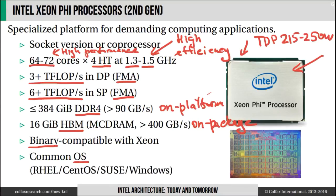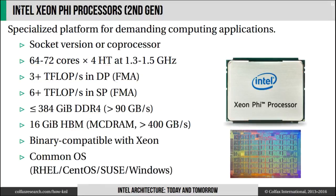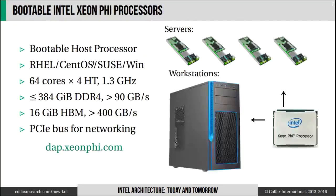Indeed, you can run general-purpose operating systems on Xeon Phi. There is official support for RHEL, SUSE, and Windows, and some people also report success with Debian-based installations. Systems with Intel Xeon Phi processors are being built and shipping today, and you can get a server or a workstation with a Xeon Phi inside.